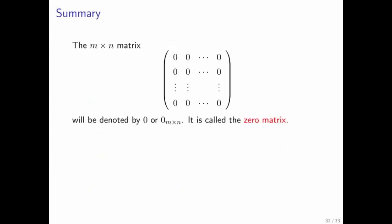So as a summary, the matrix that's m by n of all zeros, we're going to denote by zero, where hopefully from context it's clear what m and n are in that case. If it's not clear from context, then we will put a subscript m times n with the zero. And we're going to call this matrix the zero matrix. And notice that no matter what vector you multiply the zero matrix with, out comes a vector of zeros.